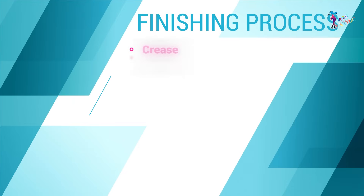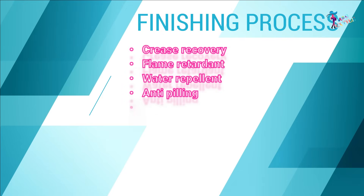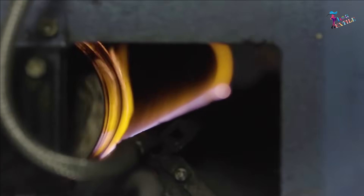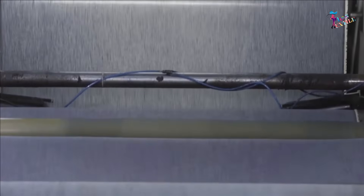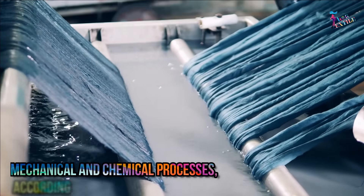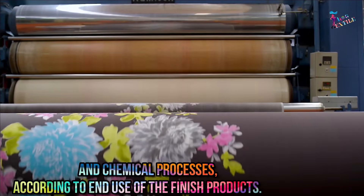In the finishing section, special finishing effects that can be added to fabrics include crease recovery, flame retardant, water repellent, anti-pilling, antibacterial, anti-static, moth proofing, softening, and hand builder treatments. These are applied by mechanical and chemical processes according to the end use of the finished products.